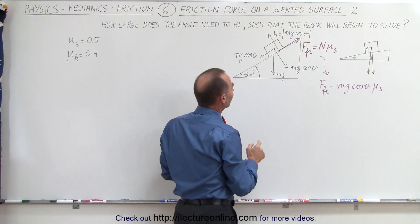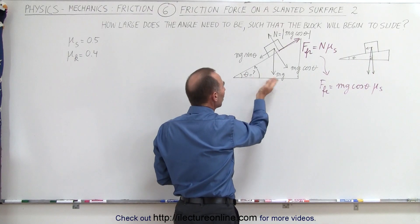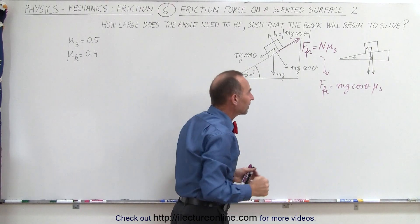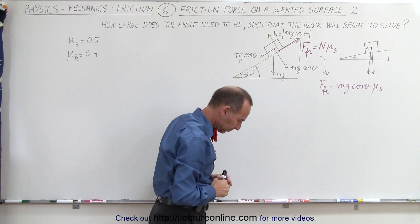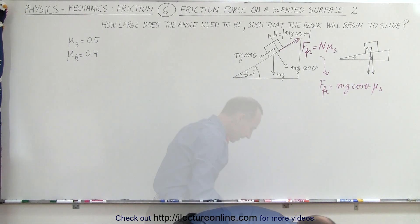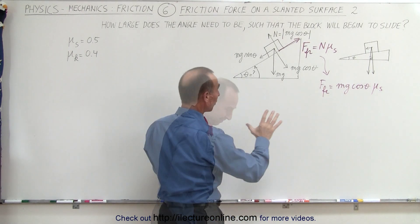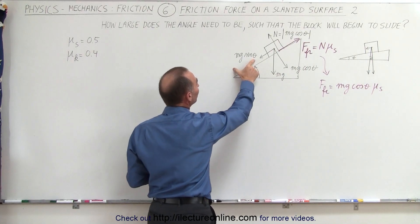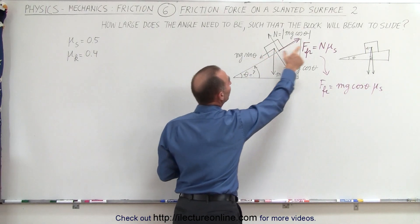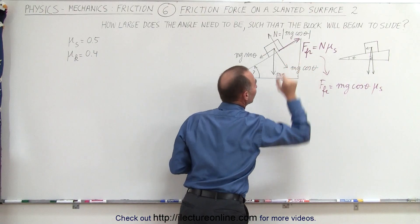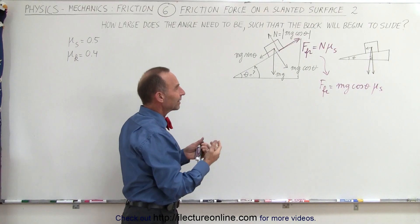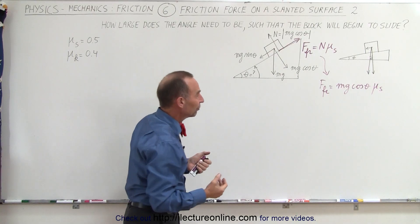So we're trying to figure out at what angle the block will begin to slide down the incline. What we're trying to do now is find the point at which this force equals the maximum that the friction force can be. So let's calculate the maximum friction force.